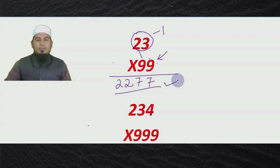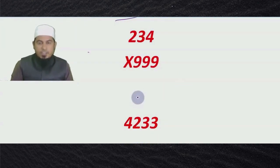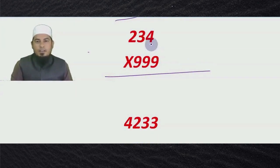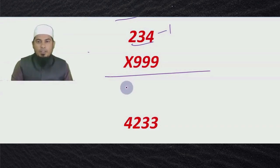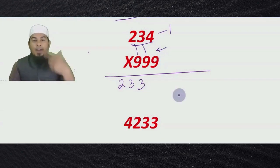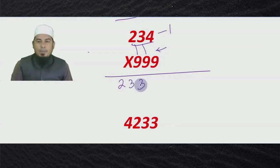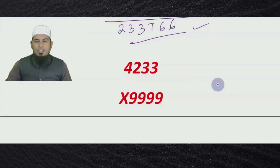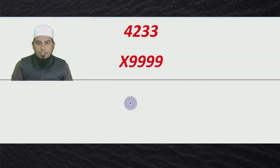Your answer is completed. Now let us see the answer for a triple-digit number multiplied with triple nine. You have to subtract the upper number by one, then each digit should be subtracted from nine, and the last one's digit should be subtracted from ten. So nine minus two is seven, nine minus three is six, and ten minus four is six. Answer completed.